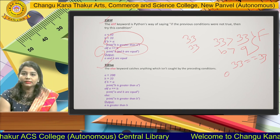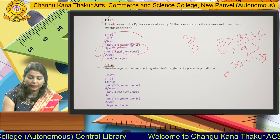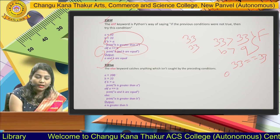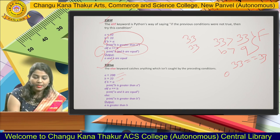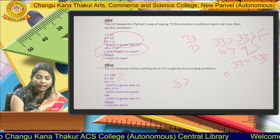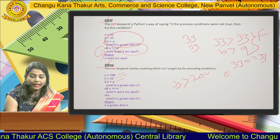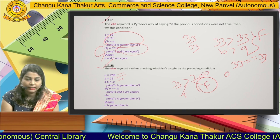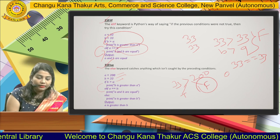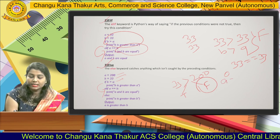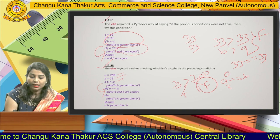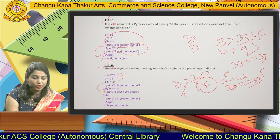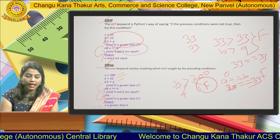The third is the else statement. The else statement catches anything not caught by the preceding conditions. In this example, a equals 200 and b equals 33. The if condition '33 is greater than 200' is false, so it goes to elif. The elif condition '33 equals equals 200' is also false. So it goes to the else statement and prints 'a is greater than b'.